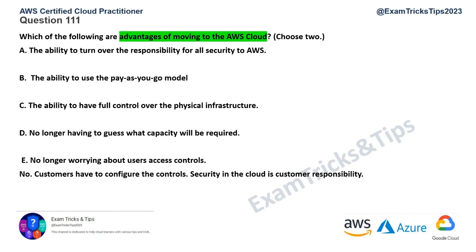Option A: the ability to turn over the responsibility for all security to AWS. This is incorrect — it's a shared responsibility. Security of the cloud is AWS's responsibility, but security in the cloud — configuration, who has access, what roles you have, database access, application access — all of that is the responsibility of the customer.